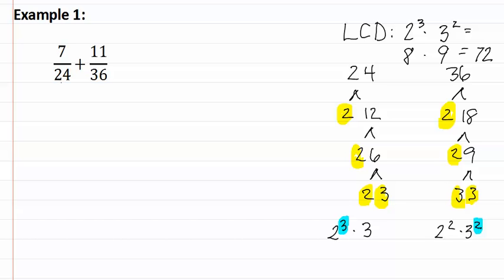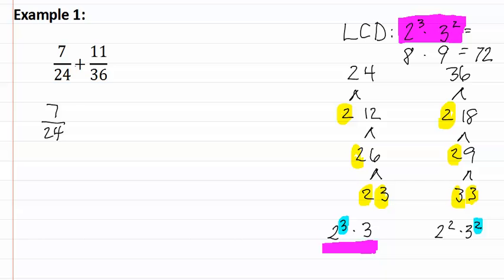It's sometimes hard to determine how we're going to get twenty-four to become seventy-two. An easy way to determine this is to compare the least common denominator's prime factorization with that of the number. If we look, they both have two to the third, but the least common denominator has one extra three. Which means if we take seven twenty-fourths and multiply both the numerator and denominator by three, we will get seventy-two for our denominator and twenty-one for our numerator.